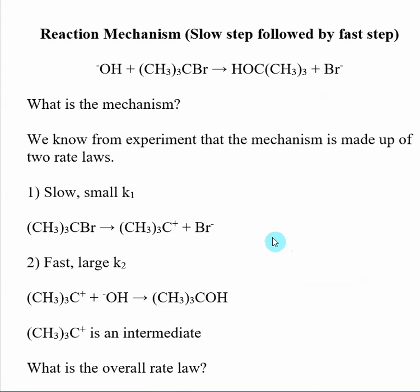Reaction mechanisms and elementary processes can be used to come up with a rate law expression for a given reaction. We need to be very specific about the reaction mechanism that we are using. The classic first reaction we use in this kind of discussion is a two-step reaction mechanism where the first step is slow and the second step is fast.